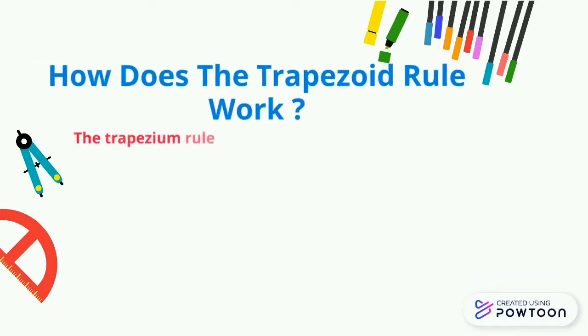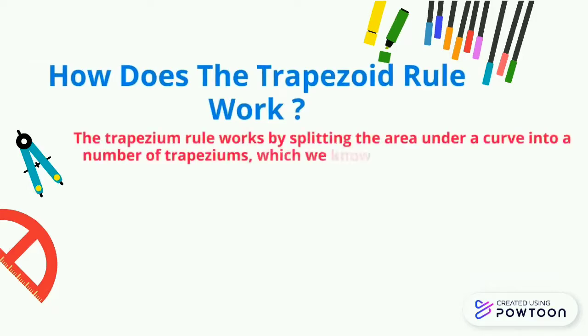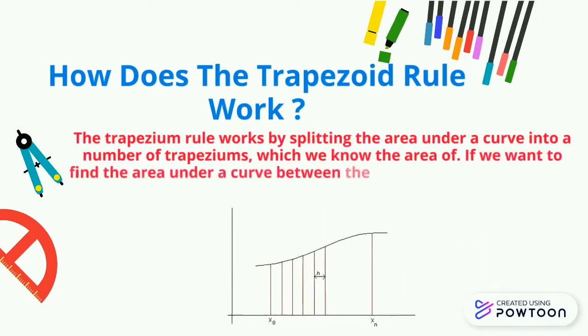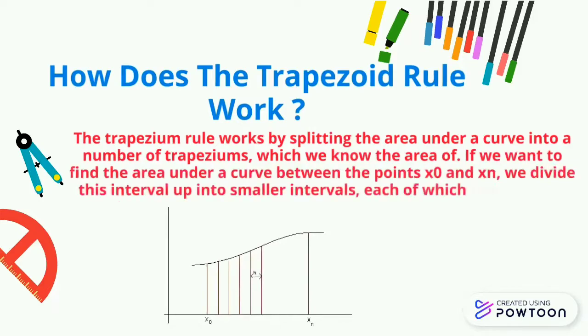How does trapezoid rule work? The trapezoid rule works by splitting the area under a curve into a number of trapeziums, which we know the area of. If we want to find the area under a curve between the points x0 and xn, we divide this interval up into smaller intervals, each of which has length h.